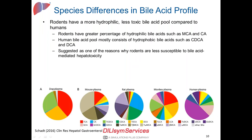There exist species differences in bile acid synthesis and metabolic pathways that lead to species-specific bile acid profiles. Looking at the pie charts, they show the bile acid profile in the plasma of different animal species and humans. Different color codes represent different forms of bile acids — either unconjugated or conjugated with taurine, and primary versus secondary bile acids. The composition of the bile acid profile within plasma is very different across species, as you can see from the different colors of the pie chart for each species.